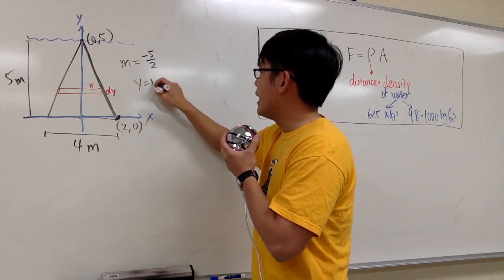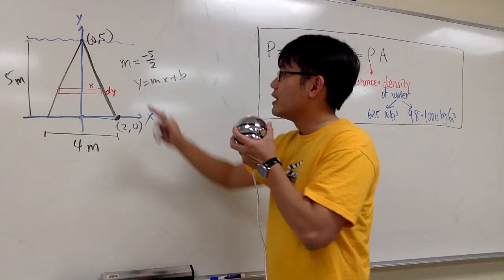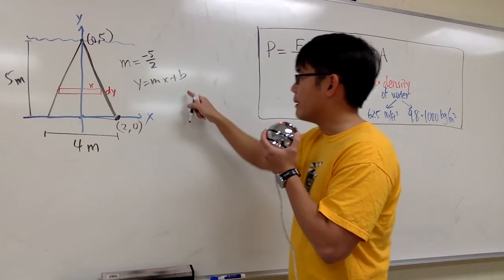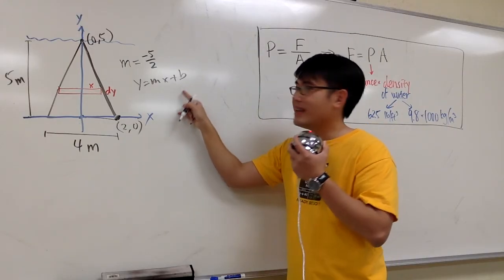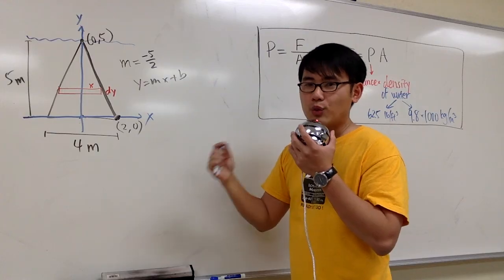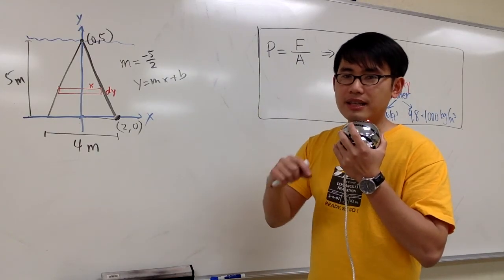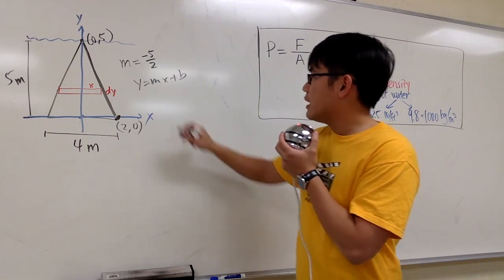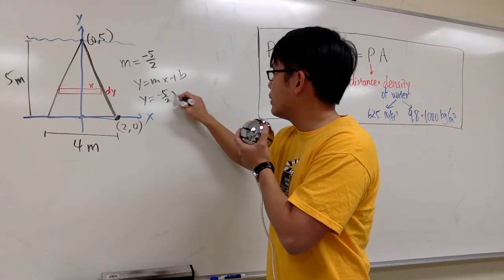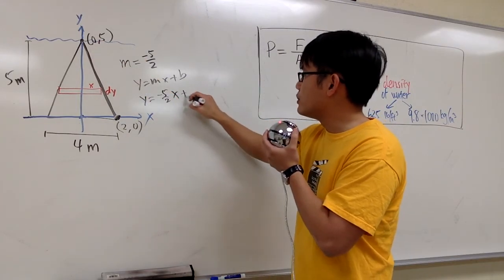And in this case, we can use y is equal to mx plus b. And the reason for that is because we know the y intercept right away. This is 0, 5. Therefore, the b will be 5. And the slope is negative 5 over 2, so this is the quicker way. If you want to use y minus y1 equals to m times x minus x1, that's fine, too. Anyways, y will be m, which is negative 5 over 2x, plus b. The b is the y-intercept, which is just the 5.